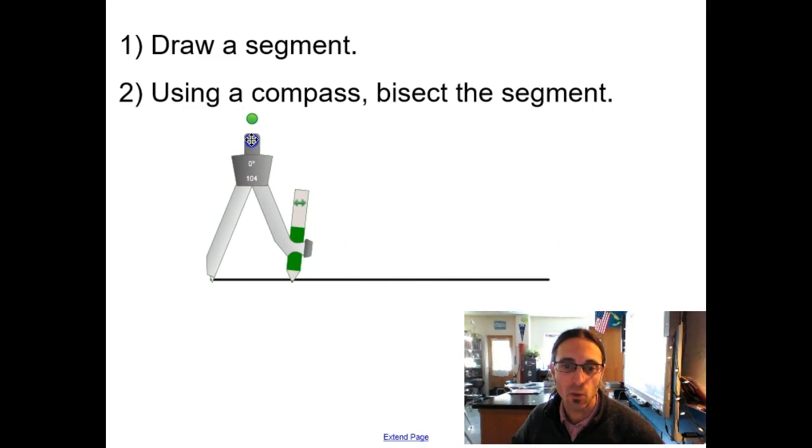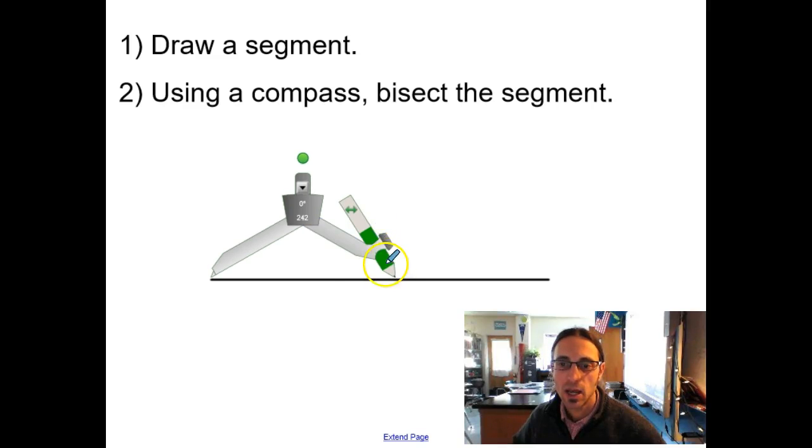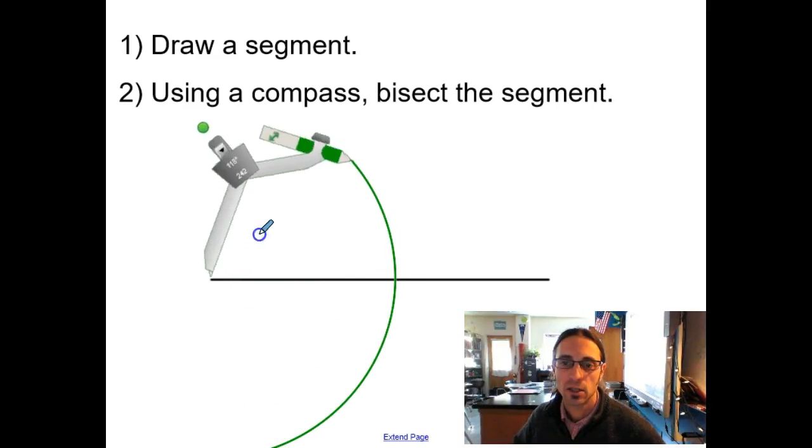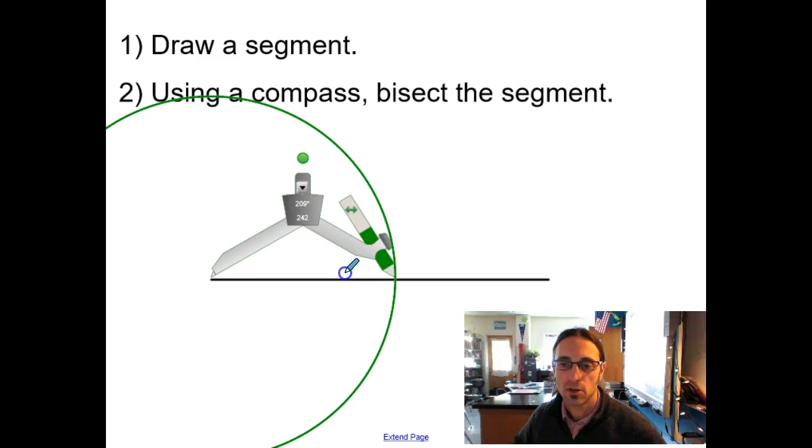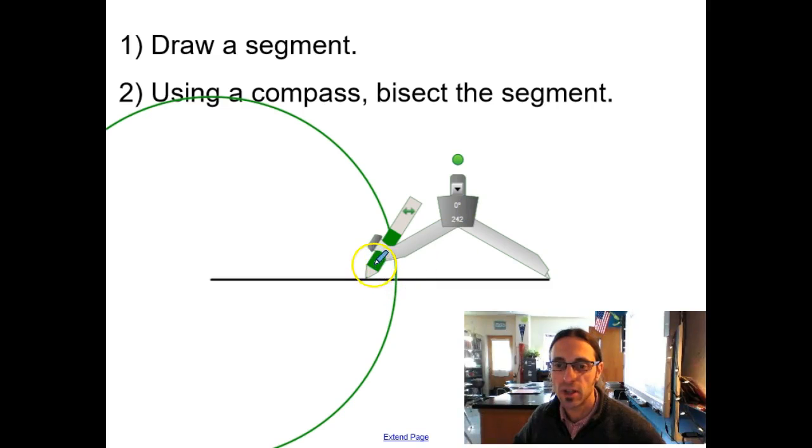I take my compass, I put the point on one end of the segment, and then I stretch it out. Let's see if I can do this here. We're going to go more than halfway. And I make my big arc like so. And then I flip it over to the other end and do the same thing on the other side.